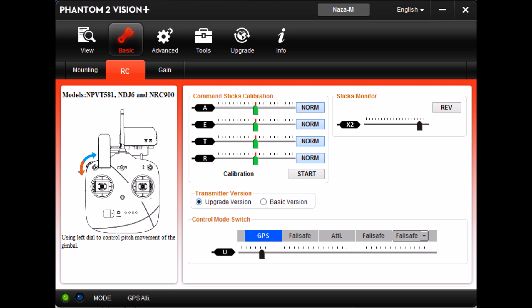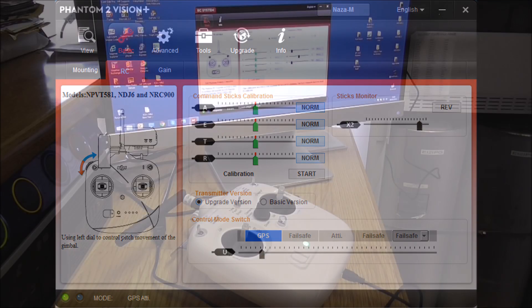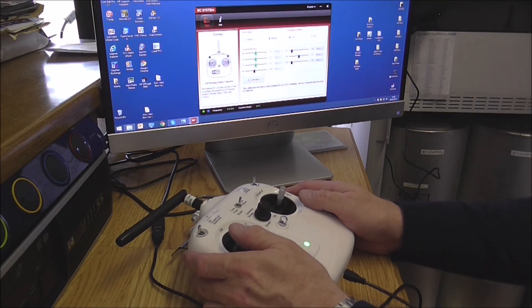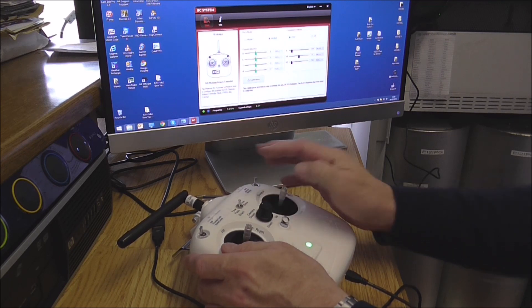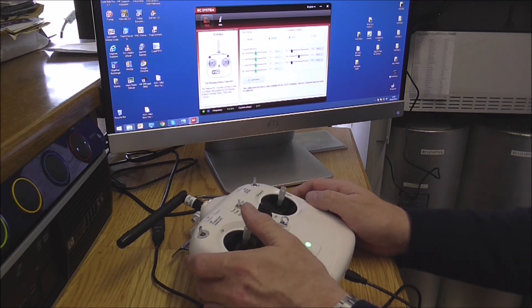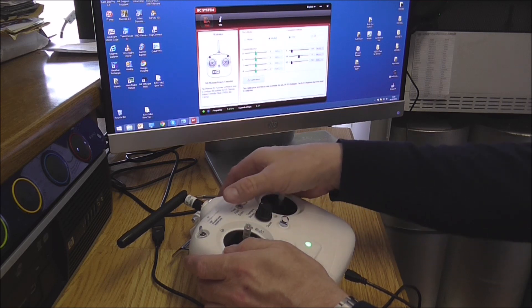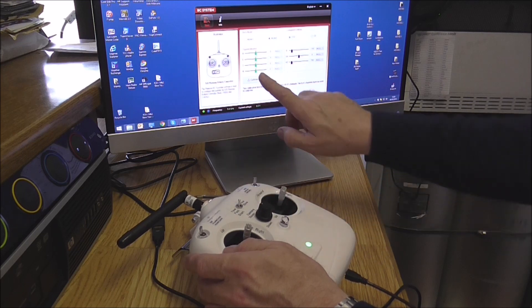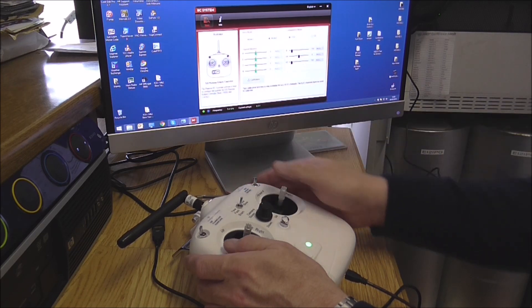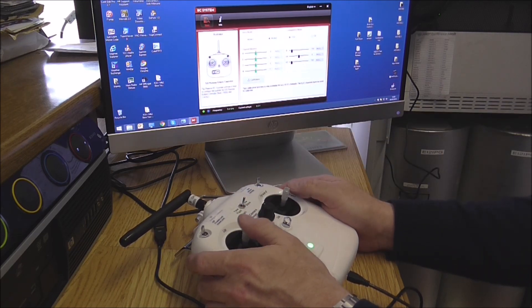When switching to slow yaw the pointer should be in the centre zero and green and moving the stick full yaw left or right you will go up about one third of the distance on the scale. Switching back into the normal position again the pointer should be in the centre reading zero and give a full negative one thousand and positive one thousand.